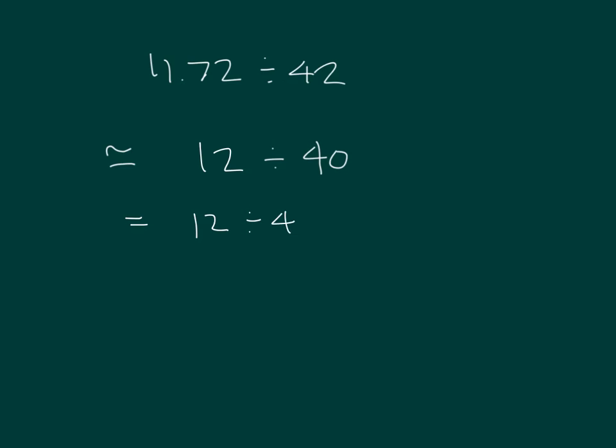That'd be 12 divided by 4, divided by 10. 12 divided by 4 is 3, and then when we divide 3 by 10, we get 3 tenths. So our estimated quotient is about 3 tenths.